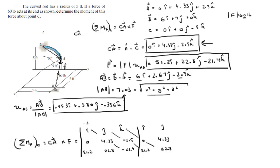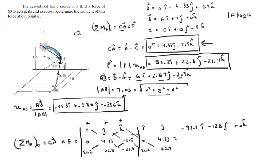For the positive diagonals: i times 4.33 times negative 21.4 gives negative 92.7i; j times negative 2.5 times 51.2 gives minus 128j; and k times 0 times 22.8 gives 0k. For the negative diagonals: negative 51.2 times 4.33 times k gives negative 221.7k; and negative 22.8 times negative 2.5 times i gives positive 57i.